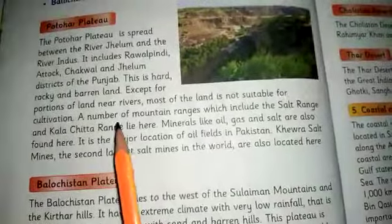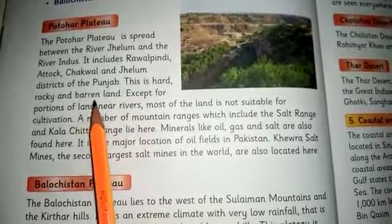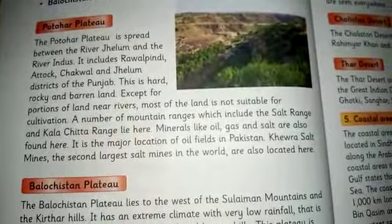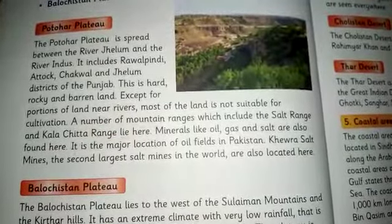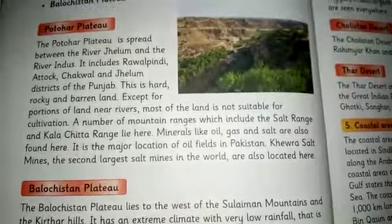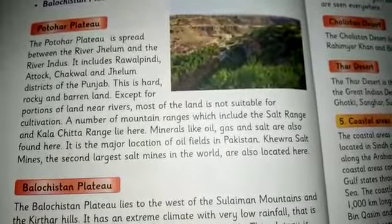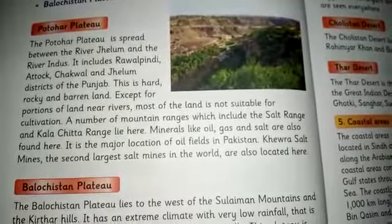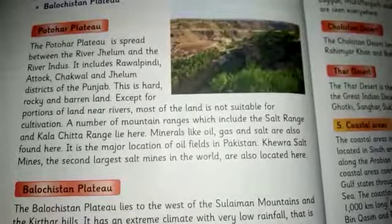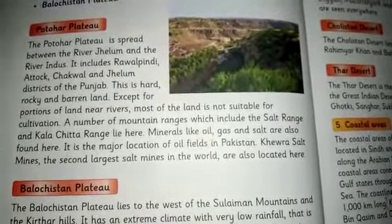Recap: The Potohar Plateau is spread between River Jhelum and River Indus. The districts of Rawalpindi, Attock, Chakwal, and Jhelum fall within it. The land there is rocky and barren, so cultivation is not possible, except in some areas near rivers.